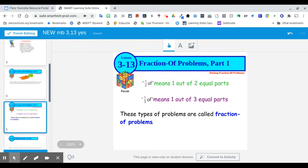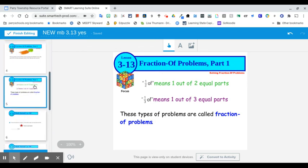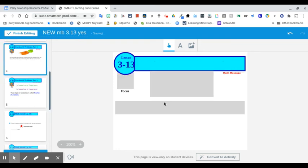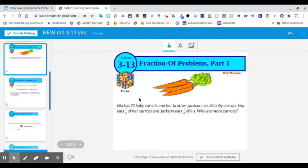These types of problems are called fraction of problems. So, when we look back at this, we could figure out, well, what is one-half of 22? That is 11. And then, one-third of 36. We could divide 36 into three parts. 36 divided by 3. And what would you get? So, one-half of 22 would be 11 carrots. And one-third of 36 would be 12 carrots. So, even though his fraction is smaller, his whole number is bigger, and he ate more carrots. Actually, Jackson ate 12. Ella ate 11.